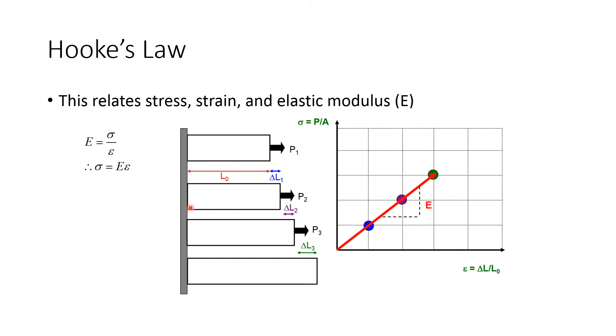So Hooke's Law, this relates stress, strain, and the elastic modulus. So this is a diagram I have taken from Dr. Underwood's notes. You can see here that as we apply these three different forces, we have resulting stress and resulting strain. So as the force is increasing, the stress will increase. You can see force per unit area. Greater force means greater stress. And as a result of the greater stress, we have a greater strain.